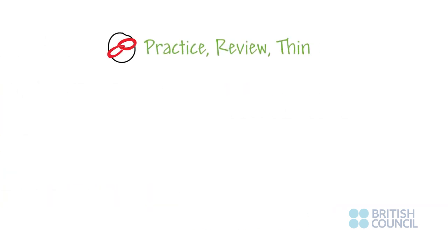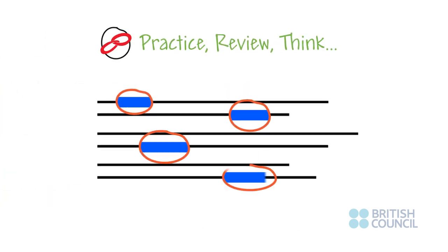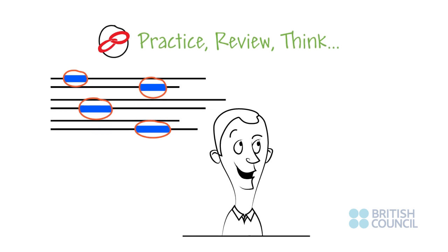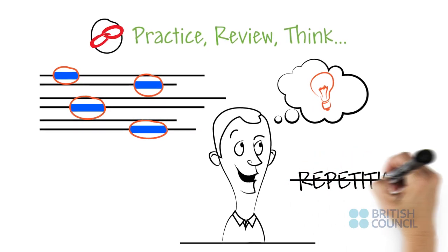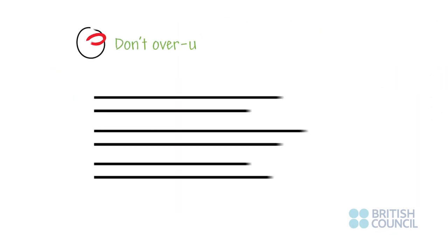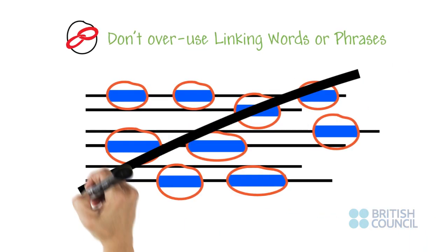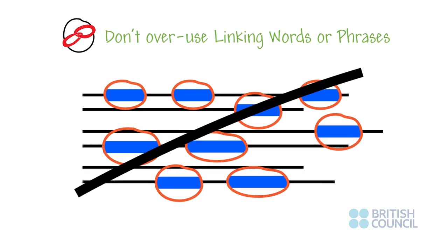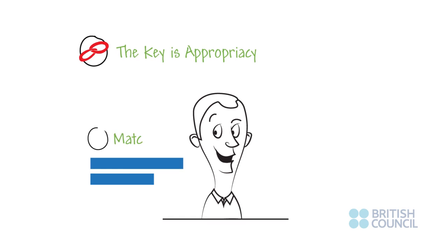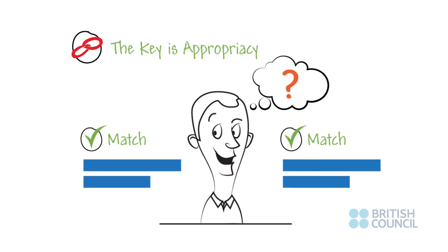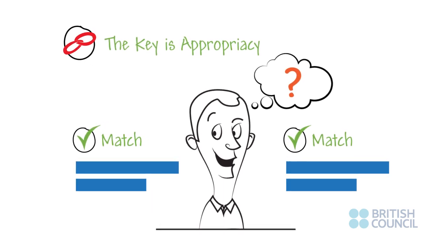As you practice writing essays, review your writing and circle the different linking devices. Then, think about how you could use different words to avoid repetition. Don't overuse linking words or phrases, however — this becomes irritating for the reader. The key in using linking words is appropriacy. Ask yourself: is this necessary and does it match the content that follows?